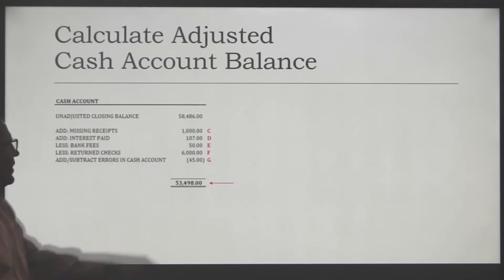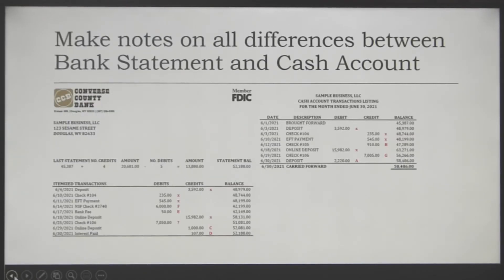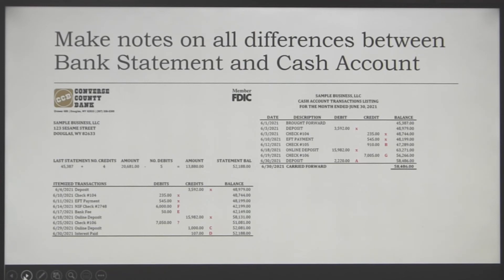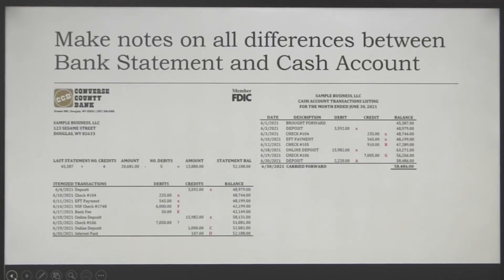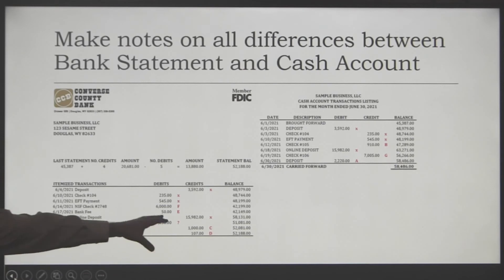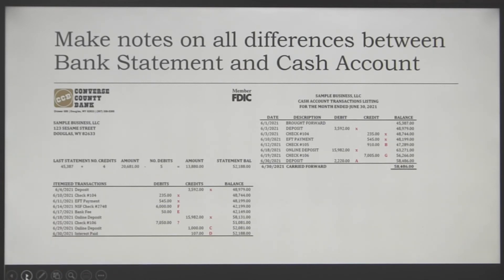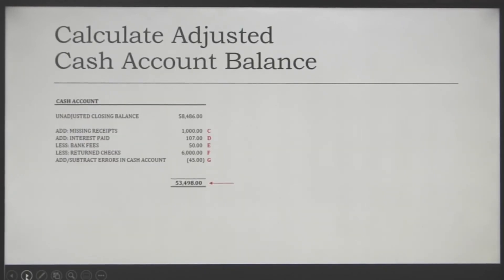The next item is interest paid for $107. If we go back to the bank statement, interest was paid on June 30th for $107. Generally, that's what you'll see at the end of the month — or it could be end of quarter. You won't know what that number is ahead of time, so that will be a common bank reconciliation issue. The next one is bank fees. Lots of banks charge a fee for the checking account — this one is $50. On June 17th, a $50 fee was charged. A lot of times that will get missed because, depending on the type of checking account that you have, you might not know exactly what the bank fee will be on a monthly basis.